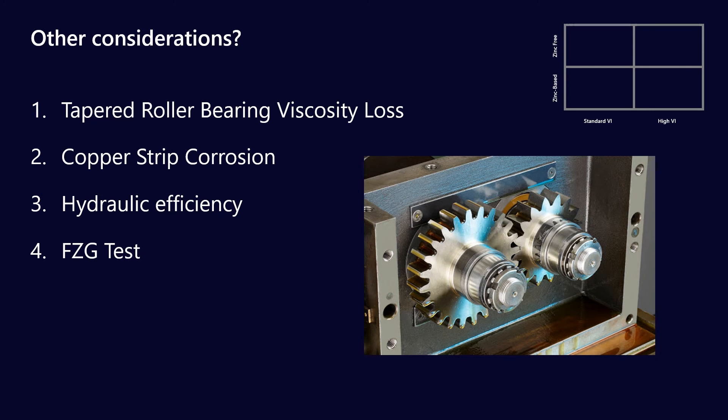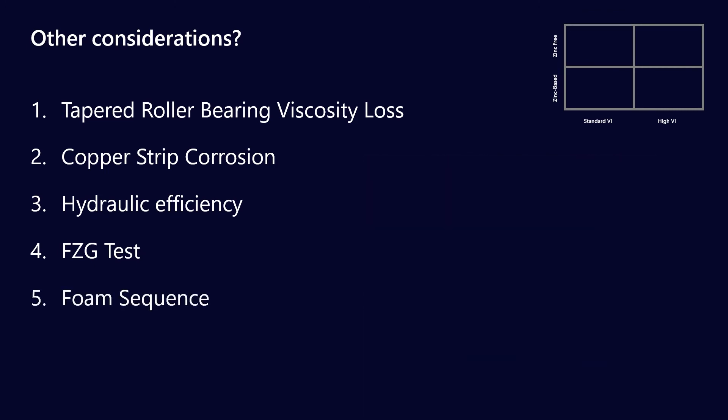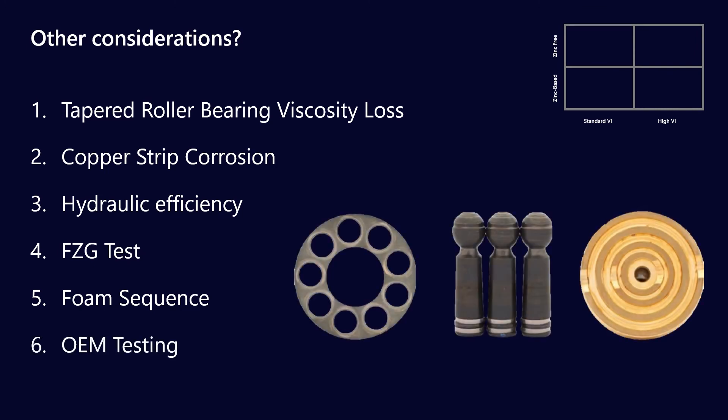There's also the FZG test. So this is a scuffing test which is focused on the performance of gear teeth but in a lot of hydraulic packs you may actually be using hydraulic oils in geared applications. So in that case you might want to take a look at the FZG rating. Foam sequence is going to give you an indication of its ability to release foam. So in particular if you have a very small oil reservoir its ability to get rid of that entrained air is going to be very important to prevent cavitation.